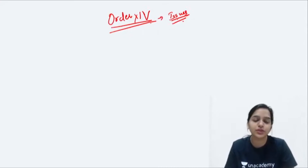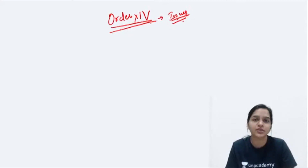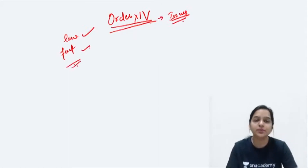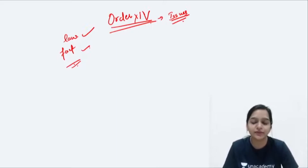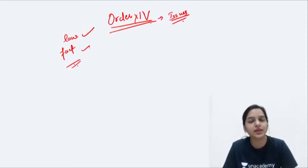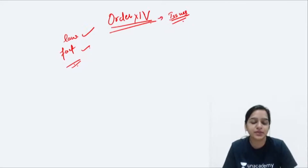Issues un chizhoon se arise hoti hain. Issues can be of law also, issues can be of fact also. Material propositions woh propositions hoti hain regarding the fact or law, which a plaintiff must allege in order to show a right to sue, or a defendant must allege in order to constitute his defense. Jo plaintiff apni plaint mein likhta hai to show his right to sue, and defendant apni written statement mein likhta hai to constitute his defense.